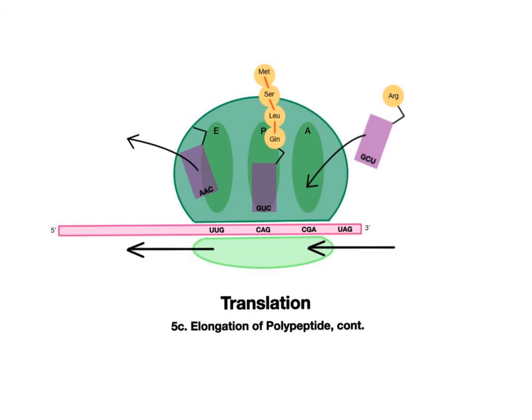In step five C, the protein continues to elongate, as the amino acid glutamine bonds to the growing amino acid chain. The complex slides from right to left, and now the messenger RNA codon CGA is calling for the transfer RNA bearing the anticodon GCU and carrying the amino acid arginine, symbolized ARG, which docks at the A site.